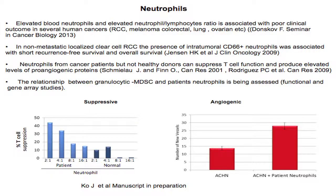Indirectly, MDSCs can induce T regulatory cells, Th2 cells, and macrophages. Neutrophils are also being studied and are found at elevated levels in kidney cancer and other cancers, correlating with poor outcomes. Neutrophils from these patients are immunosuppressive compared to normals, and unlike normal neutrophils, they can promote tumor vasculature when mixed with granulocytic MDSCs in NOD-SCID mouse models.